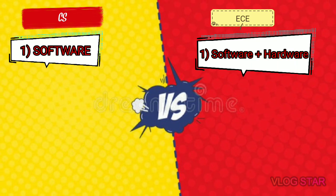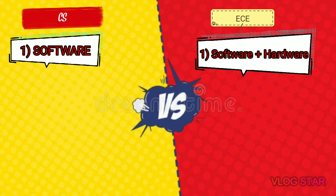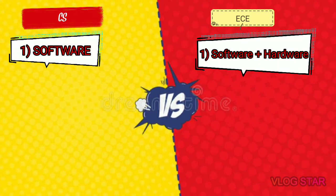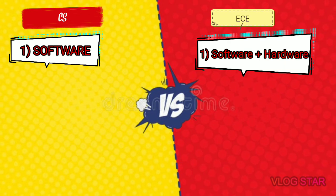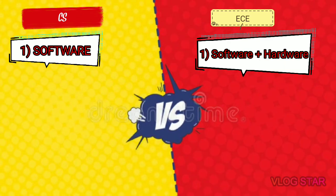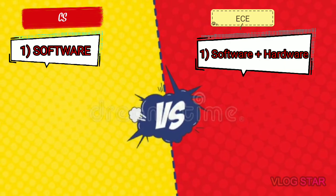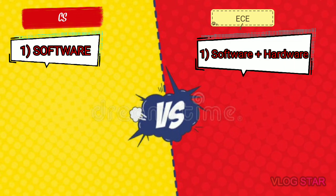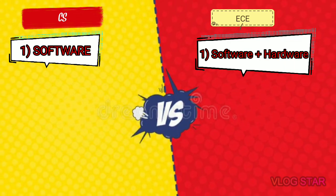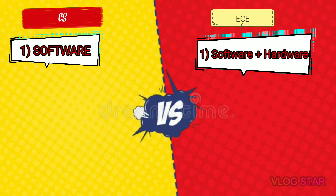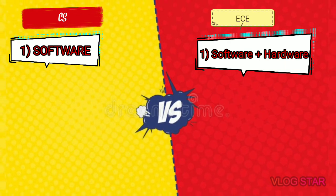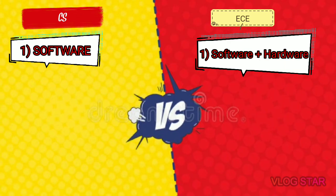CS branch focuses on software, so students only learn about programming, algorithms, operating systems, and databases. Whereas in ECE branch, the focus is on both hardware and software, so students have some physics subjects like semiconductors, resistors, and some basic programming languages.